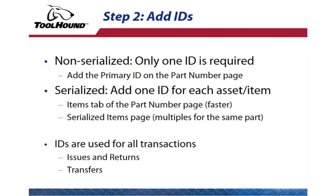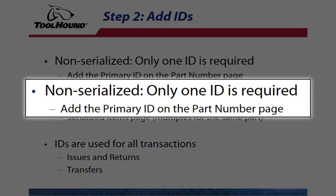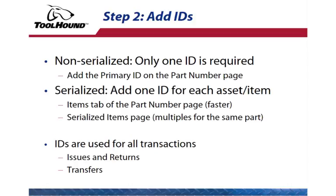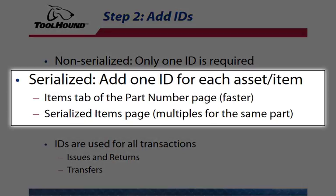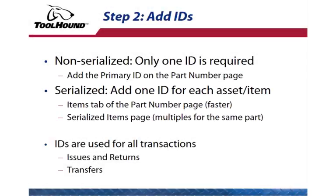Step 2: adding IDs. The next step in adding inventory is adding the asset IDs. For non-serialized inventory, only one ID is required, and it is added on the part numbers page when you create the part. For serialized inventory, one ID is added for each unique asset. It's quicker to add the first unique ID from the items tab of the part numbers page. When adding multiple items for the same part number, you can copy that first record on the serialized items to add subsequent items. IDs are used for all transactions to identify inventory, whether serialized or non-serialized, including issues, returns, transfers, and other transaction types.